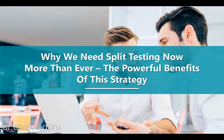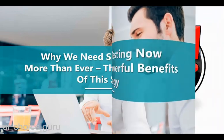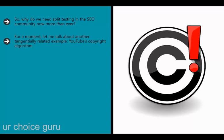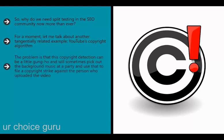Why do we need split testing in the SEO community now more than ever? The simple answer is that SEO is more complex than it has ever been and we have even less idea of how it works. Consider YouTube's copyright algorithm as a tangentially related example: an algorithm designed to ensure users don't upload copyrighted content. In theory it protects intellectual property, but the problem is that it can be a little overzealous, sometimes picking out background music at a party and filing a copyright strike.